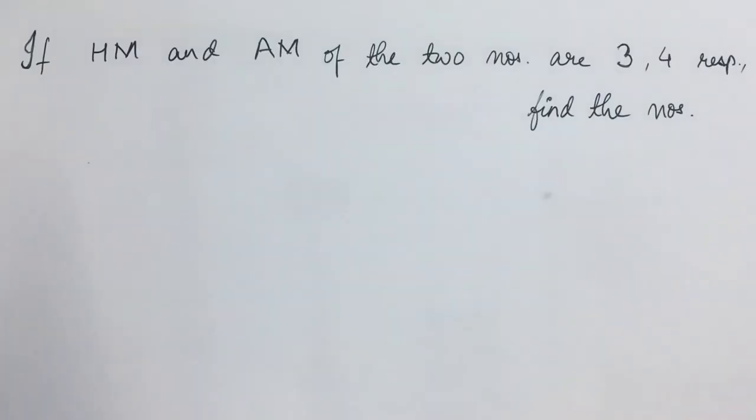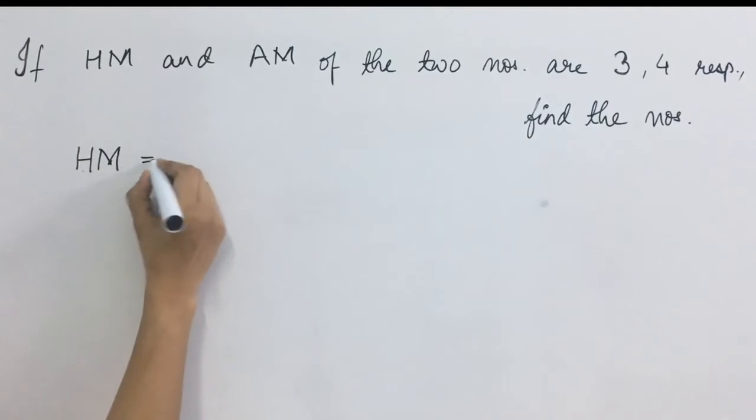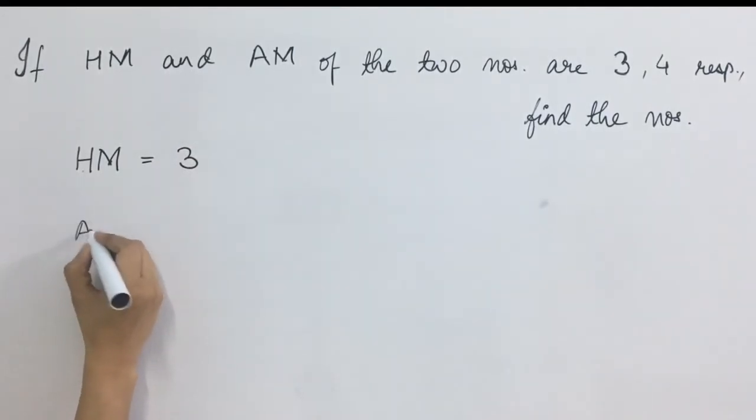To understand this concept better we shall take this example. If harmonic mean and arithmetic mean of two numbers are 3 and 4 respectively, then you are asked to find the numbers. We are given that HM is equal to 3 and AM is equal to 4. And what you are asked here, you have to find the two numbers, that is you have to find A and B.